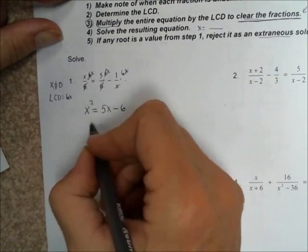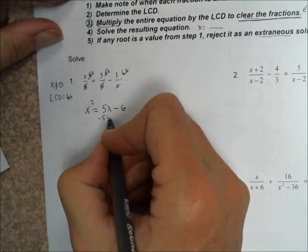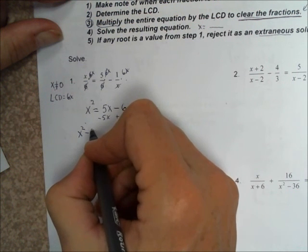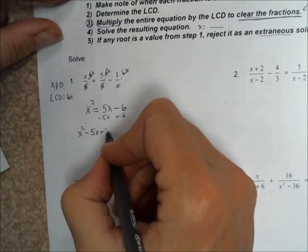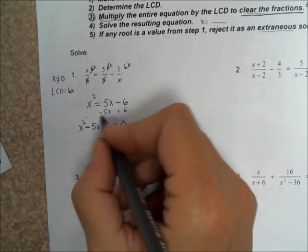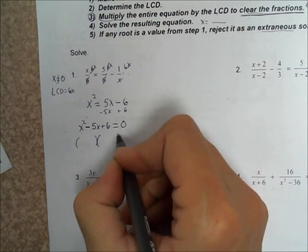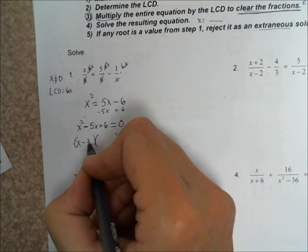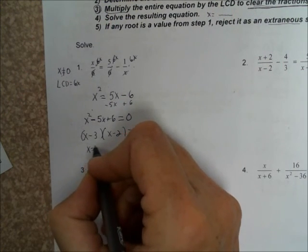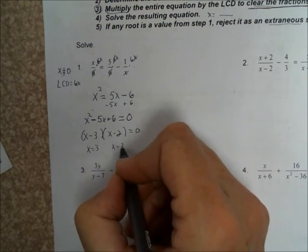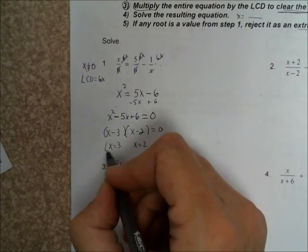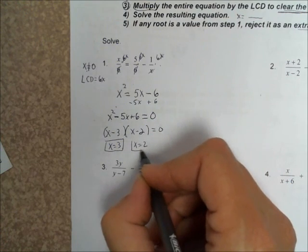This is a quadratic equation, so you have to set it equal to 0 by subtracting 5x from each side and adding 6 to both sides. We get x squared minus 5x plus 6, equal to 0. Quadratic equations also have to be factored in order to solve them. The factors of 6 that add up to negative 5 are negative 3 and negative 2. So x is equal to 3, and x is equal to 2. Since these two values do not match the value we got in step 1, we know that these aren't extraneous solutions.